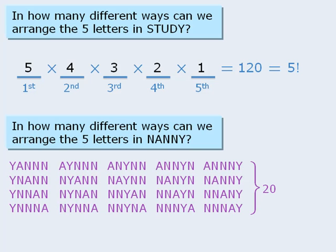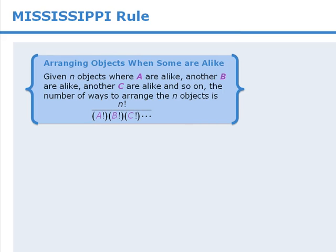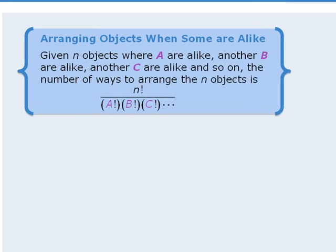So as you can see, when we are arranging objects where some of the objects are identical, we need to handle the question differently. Now, in general, we can use the following rule to handle arrangements where some of the objects are identical.